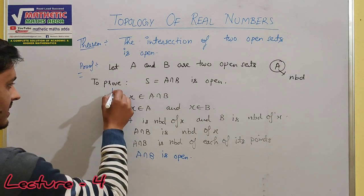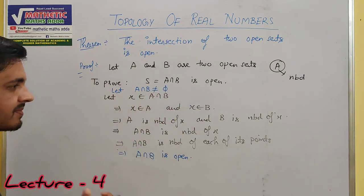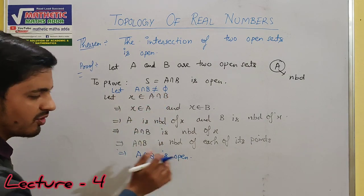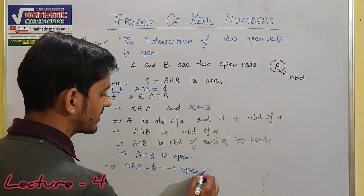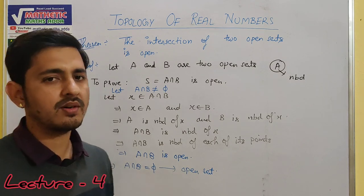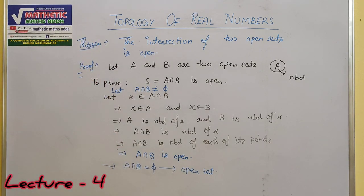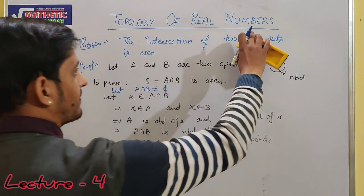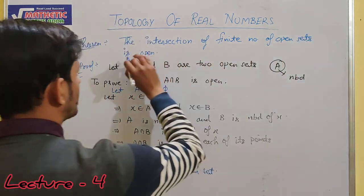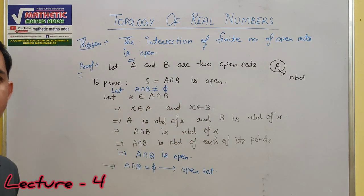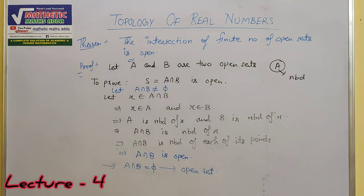अब देखिए, A intersection B may be empty और may not be empty। पहले case में हम यह मान के चल रहे हैं कि यह non-empty है — मतलब कम से कम एक element तो है। इस case में हमने देखा कि यह open आ रहा है। और दूसरा case यह है कि अगर intersection empty हो गया, तो empty set open set होता है — यह पहले के video में बता चुका हूँ। तो उस case में भी यह open set हो जाएगा। दोनों cases में दो open sets का intersection भी open होता है। यह मैंने दो sets के लिए दिखाया, आप बढ़ाकर उसी तरीके से इसका proof कर सकते हैं।